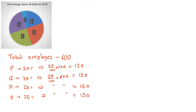And at skill level T, the employment was 5% of total, which equals 30 employees. We can check by totaling these numbers that all of them add up to 600.